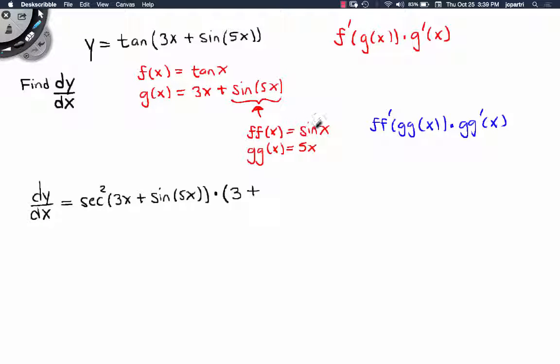And so that's going to end up being, what's the derivative of sine? It's the cosine. But not of x, of what's inside, which is 5x, times the derivative of the inside, which is 5x. So that's times 5.